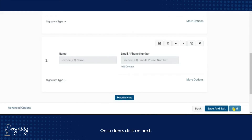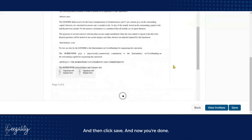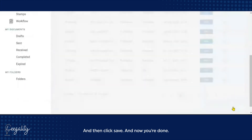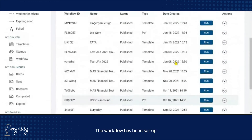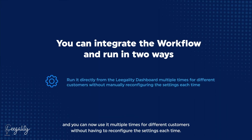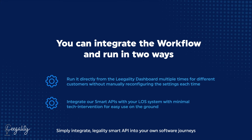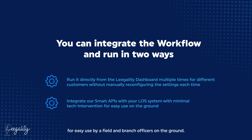Once done, click on Next, and then click Save. The workflow has been set up and you can now use it multiple times for different customers without having to reconfigure the settings each time. For an API integration, simply integrate Legality Smart API into your own software journeys for easy use by your field and branch officers on the ground.